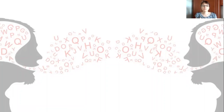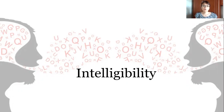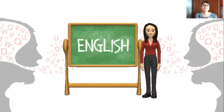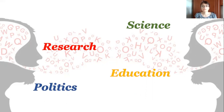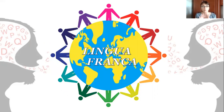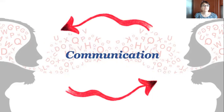In this video I'd like to focus on the concept of intelligibility, so let's see what it means. English has become a global language, definitely not in a geographical sense, but rather in terms of its use. Nowadays it is widely used in various contexts such as research, science, education, politics, and so on. So it has become the lingua franca, enabling people from all over the world to engage in the process of communicating their thoughts and ideas.